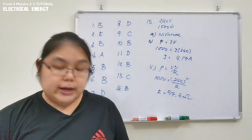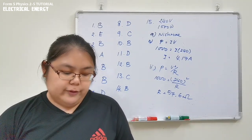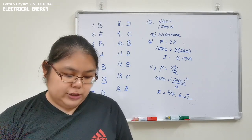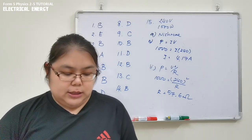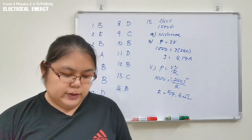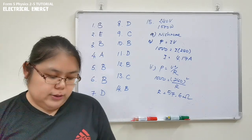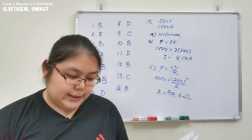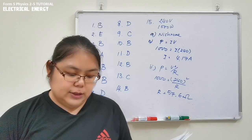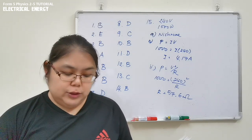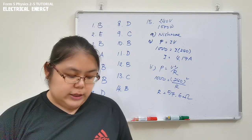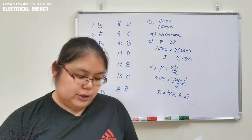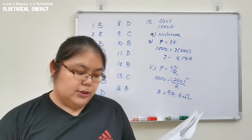Part (c) describes an experiment where a student compares the heating effect of three immersion heaters P, Q, and R. The volume and initial temperature of water are fixed. The table shows potential difference, current, and time taken in minutes — remember to convert minutes to seconds.